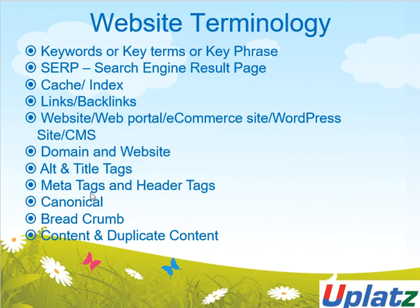Tags like title tag, meta tag, header tag, canonical, breadcrumb, content, duplicate — these all play a very important role. Alt tag and title tag are basically placed on images because search engines were not initially able to understand content over an image. That was around seven to eight years back; now search engines have the capability to read and identify images. Still, alt tag and title tag play a very important role in SEO because whatever we place in the alt and title tag comes as a keyword, increasing the keyword density.